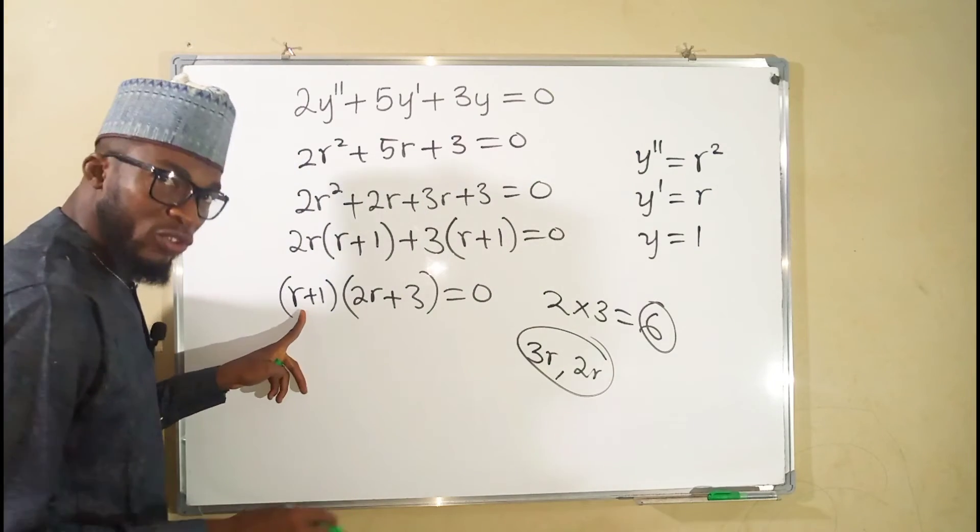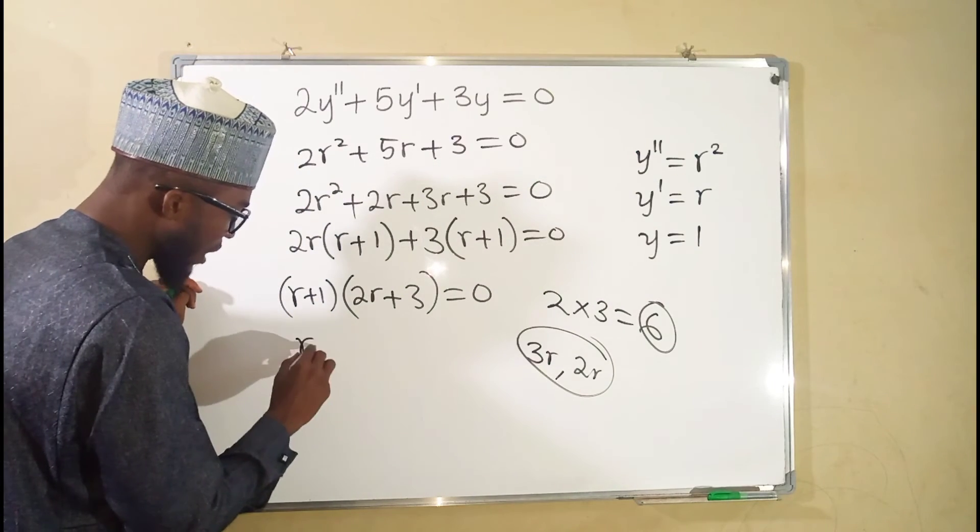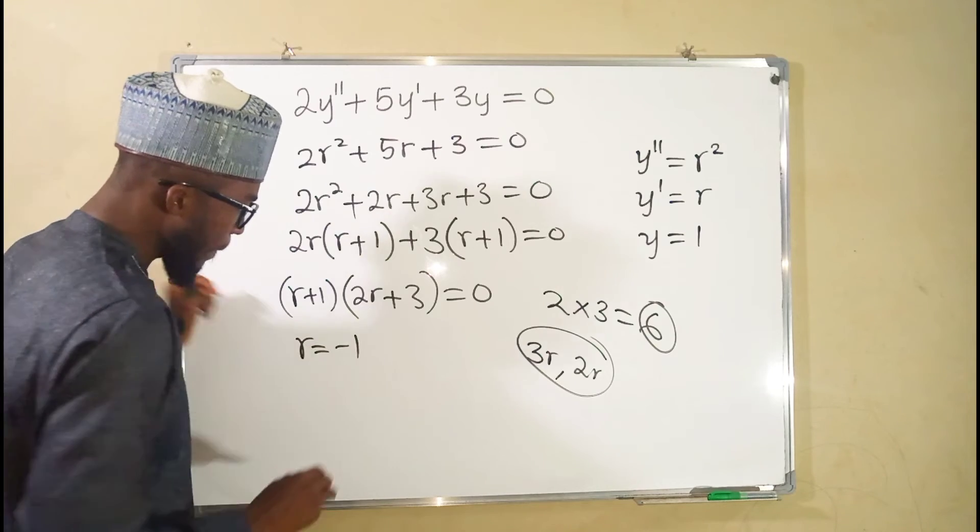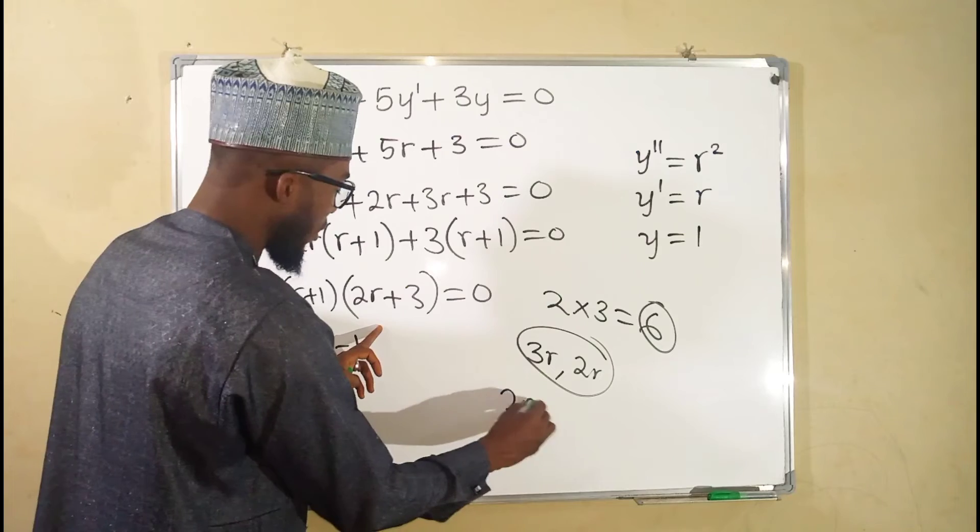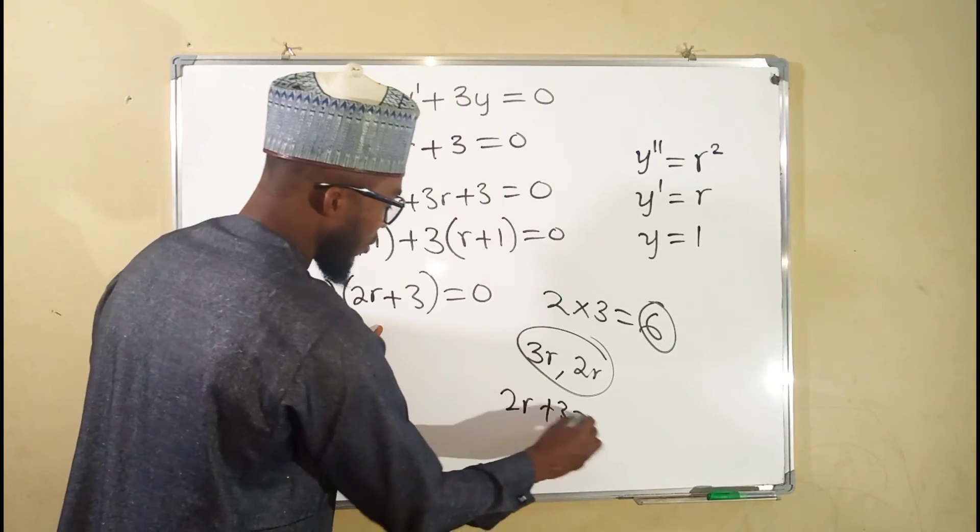If you set the first factor to be equal to 0, you are going to obtain r equal to negative 1.